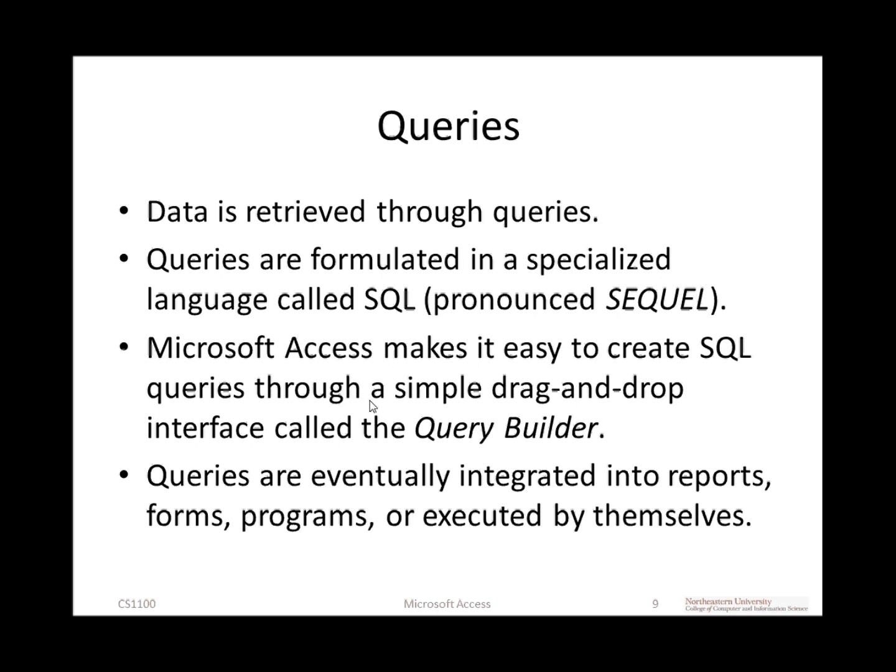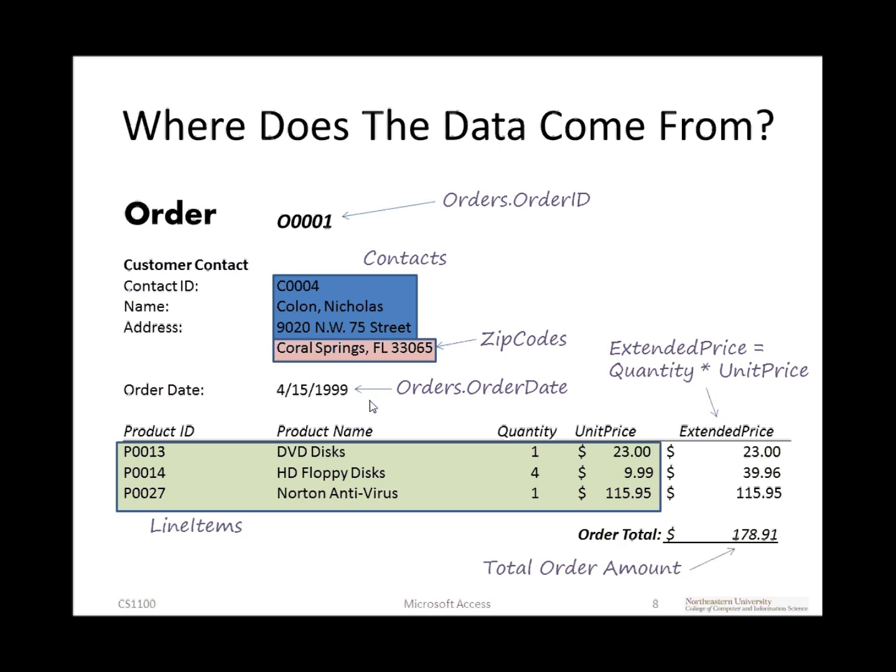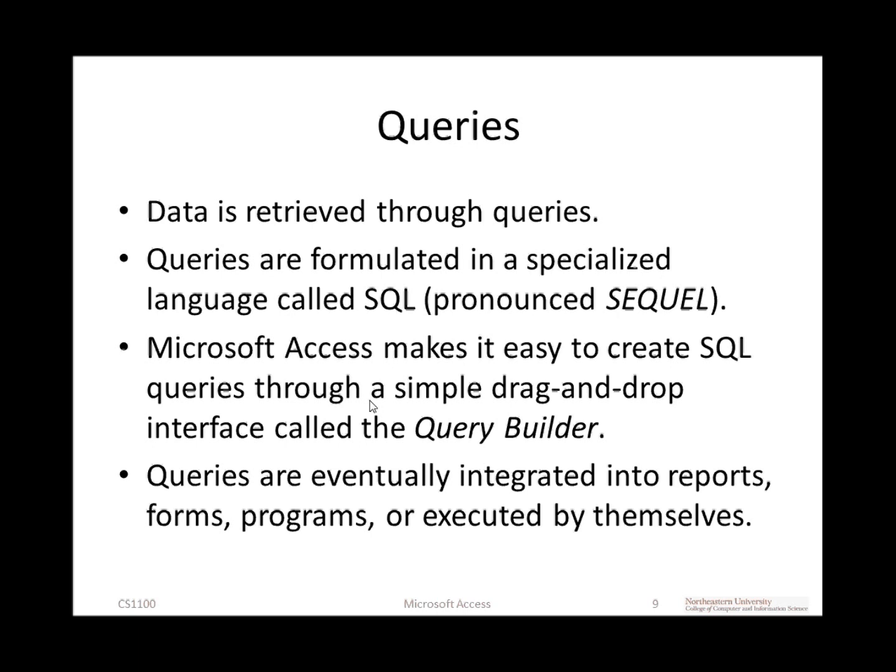Queries in Microsoft Access are formulated in a specialized language called SQL — written SQL, though many people pronounce it 'sequel.' We actually don't have to learn that programming language directly. Instead, we can use a simple drag-and-drop interface called a query builder or query designer, which makes the construction of queries in Microsoft Access very simple. Eventually we'll take those queries and integrate them into reports, add them to dynamic web pages, or run them ad hoc to find out things about the data in your store.